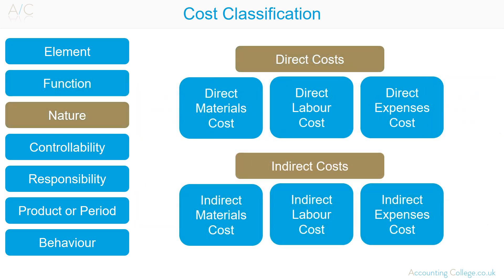By nature, costs are classified as direct and indirect costs. Direct costs can be defined as costs which can be completely attributed to a cost object, such as a product cost unit, a department or a project cost centre. Examples of direct costs include: direct materials (e.g., cloth for making curtains), direct labour (e.g., wages of workers stitching the cloth), and direct expenses (e.g., freight charges for importing specialised materials). The total of direct costs — direct materials plus direct labour plus direct expenses — is known as prime costs.